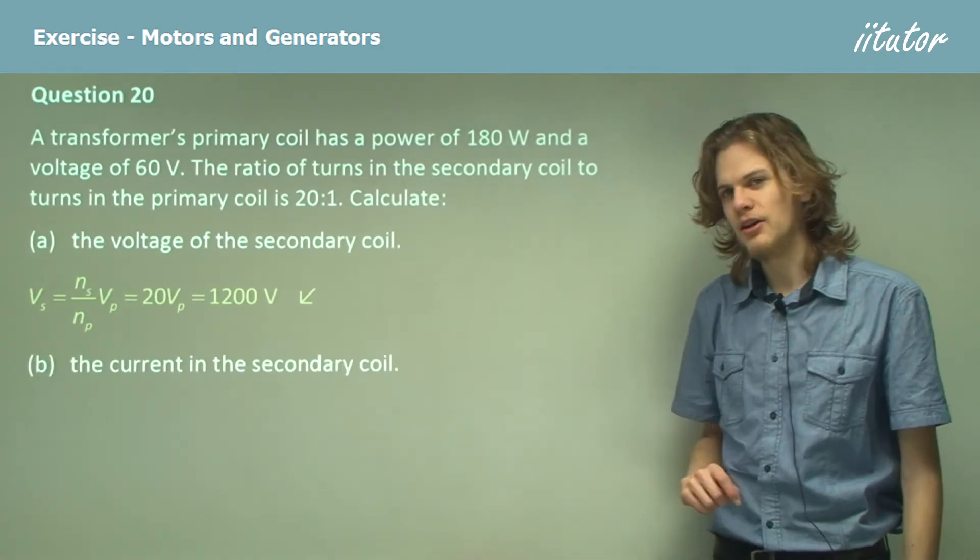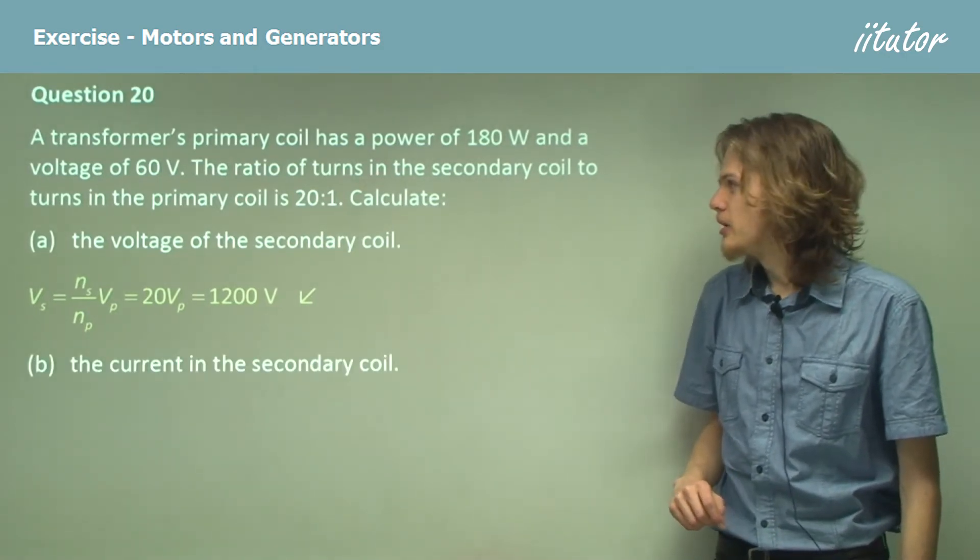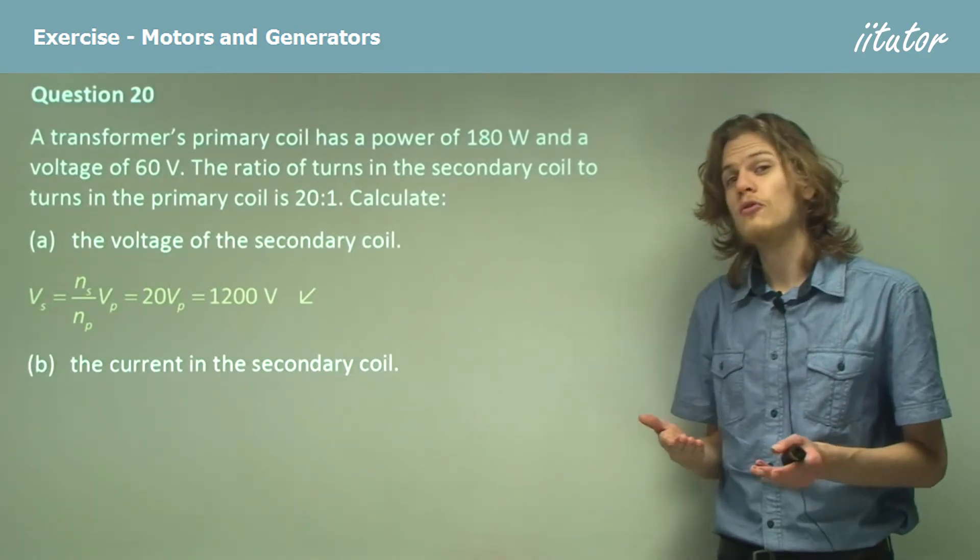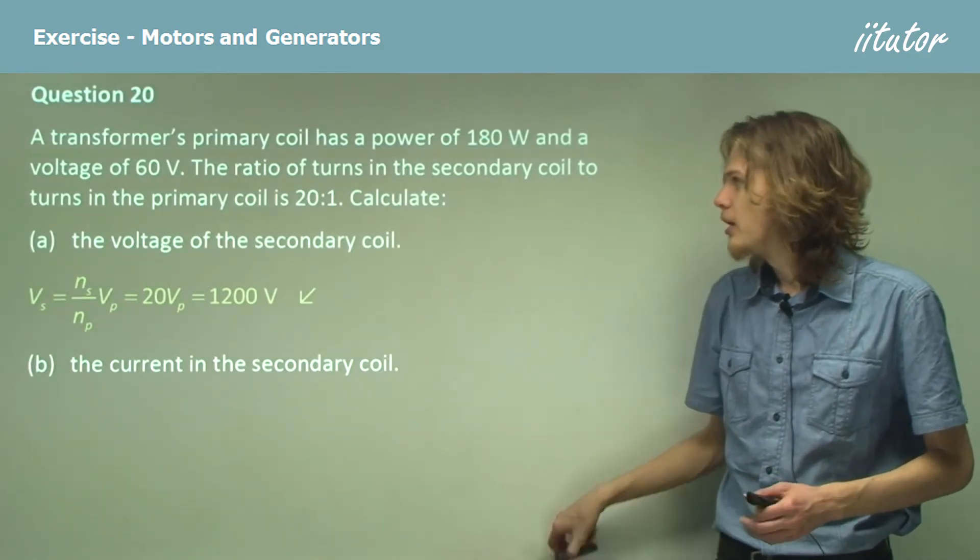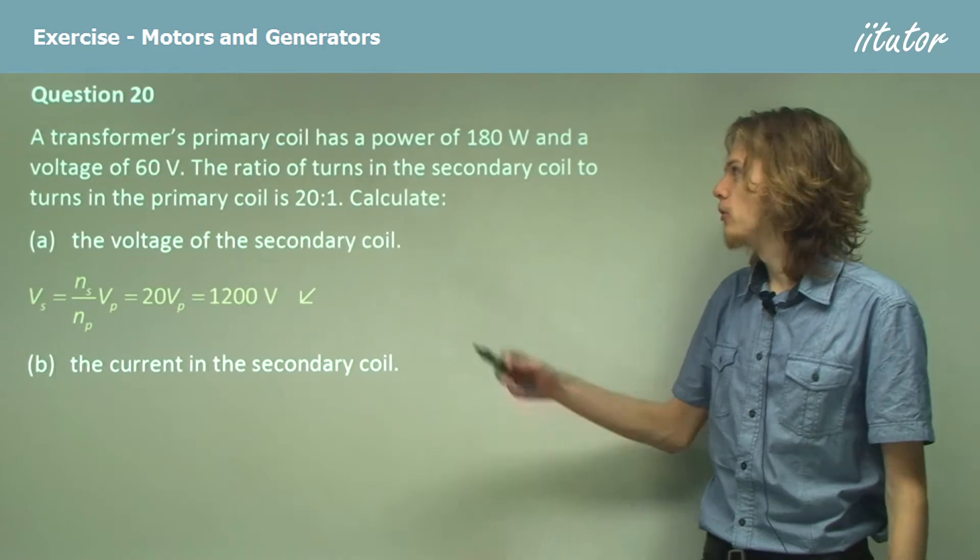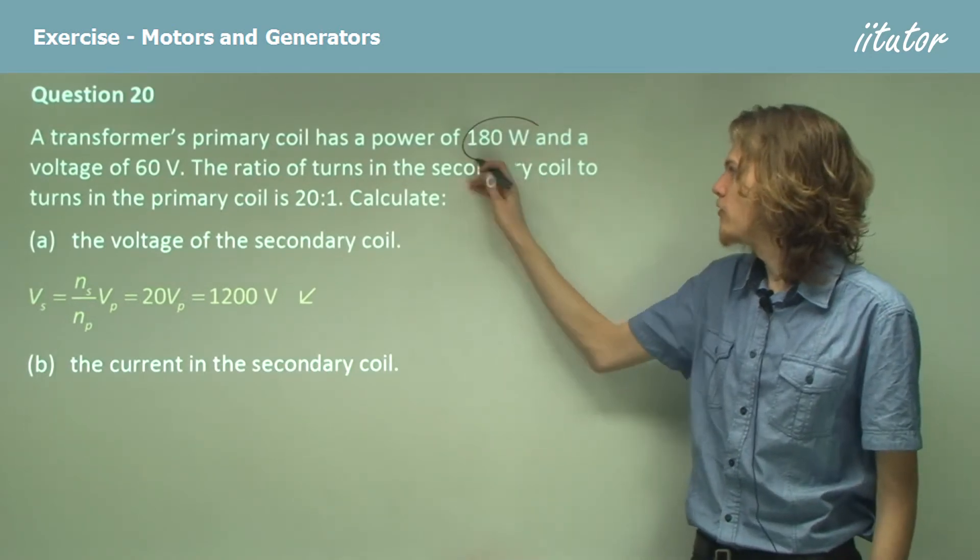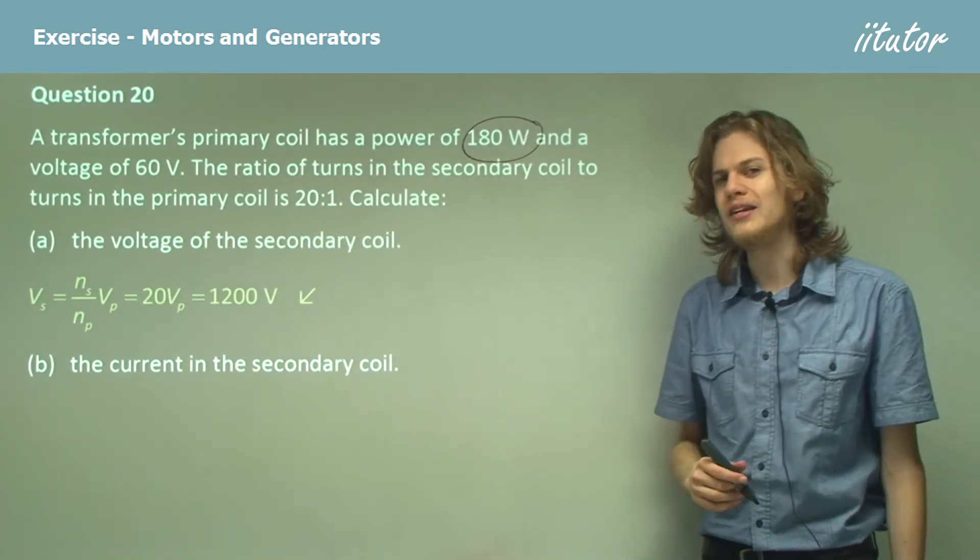Find the current in the secondary coil. Now, assuming that we have a perfect transformer, the power of the secondary coil will be the same as the power of the primary coil, 180 watts.